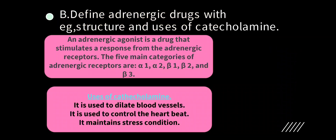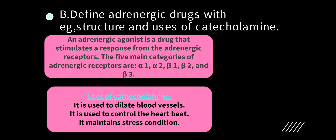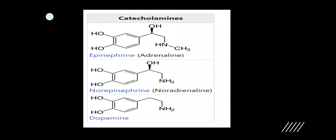Define adrenergic drugs with examples and uses of catecholamine. Adrenergic agonists are drugs that stimulate the response from adrenergic receptors. There are mainly five adrenergic receptors: alpha-1, alpha-2, beta-1, beta-2, and beta-3. Uses of catecholamine: it is used to dilate blood vessels, control heart rate, and maintain the stress condition. The three main catecholamines are epinephrine, norepinephrine, and dopamine.